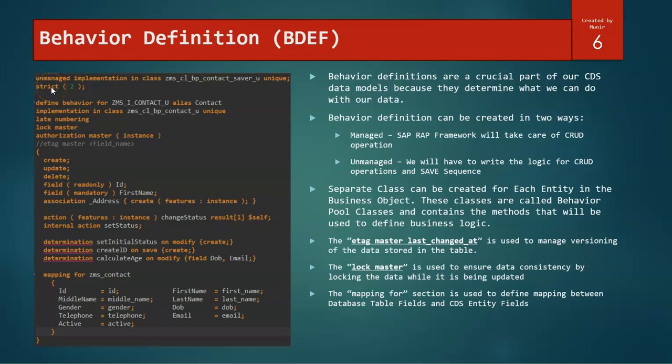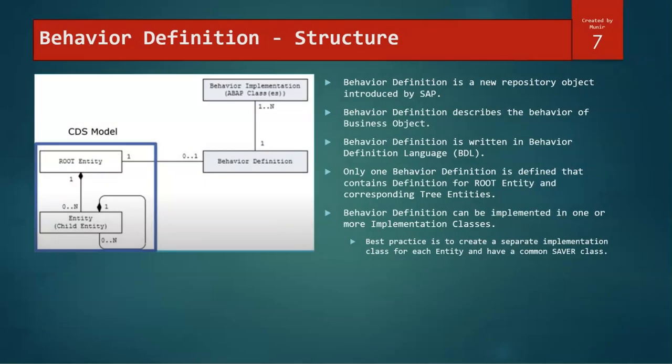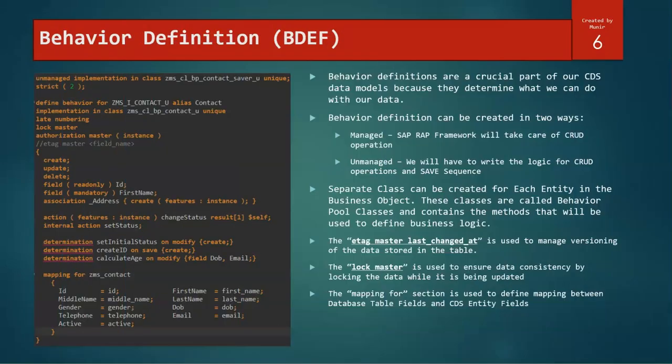Now when you are creating a behavior definition, this is an unmanaged example where it allows you to define the saver class. Everything will be in one class and the related CUD operations in a different class. For the managed scenario, the saver will be done by the SAP framework, so there is no need to define the saver class separately. E-tag master is used using a field name that allows us to manage the versioning, and it will allow us to have data consistency. That means if user one is editing one entity, user two will not be allowed to edit the changes. There will be a pop-up that will be shown by the RAP framework that somebody else is already editing it. Please get the latest change and then move on.